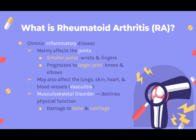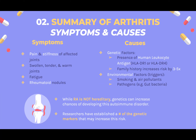Rheumatoid arthritis is a chronic inflammatory disease that affects the smaller joints at first, then progresses to the larger joints, eventually causing damage to the bone and cartilage. The main symptoms of RA are pain and stiffness of the joint and the development of rheumatoid nodules. The causes of RA range from genetic factors such as the human leukocyte antigen to environmental factors such as smoking and pathogens. RA is not hereditary; however, a number of genetic markers have been found by researchers that may increase the risk of developing RA.